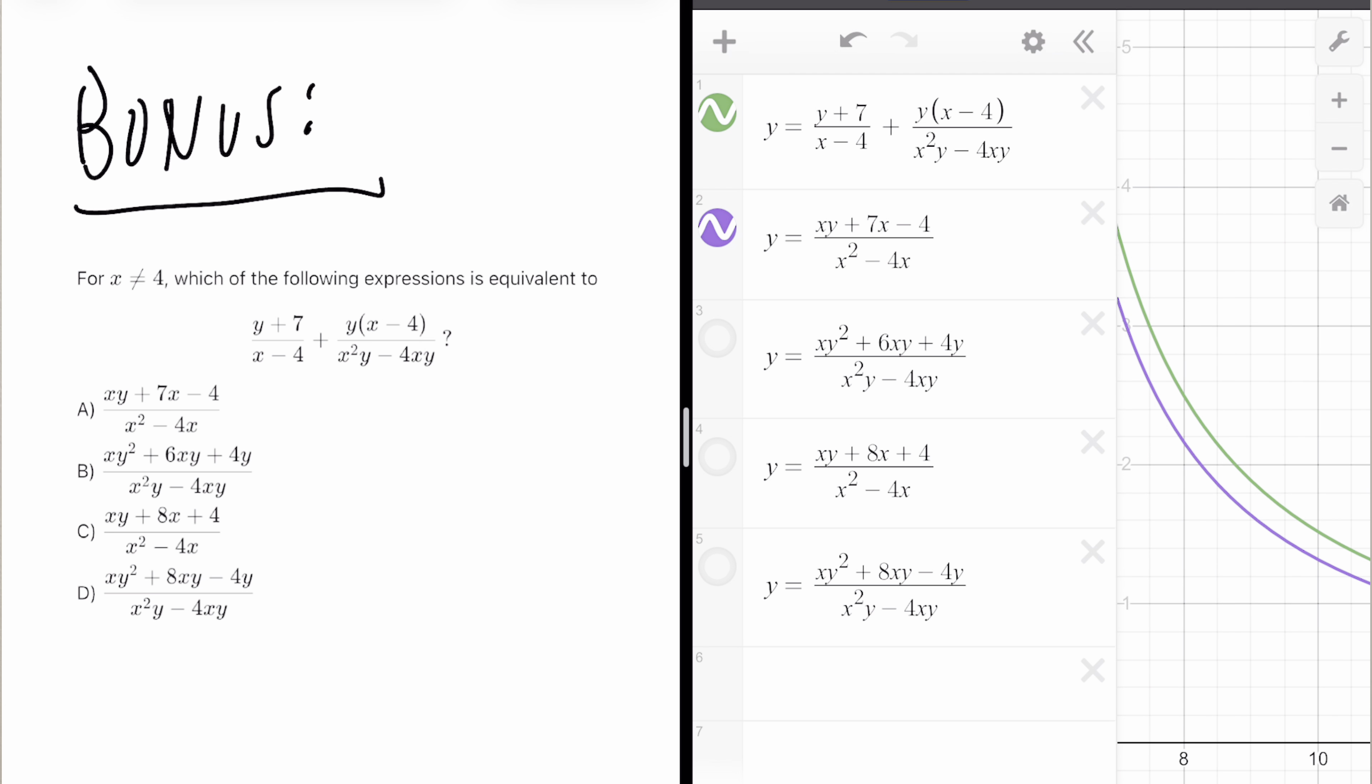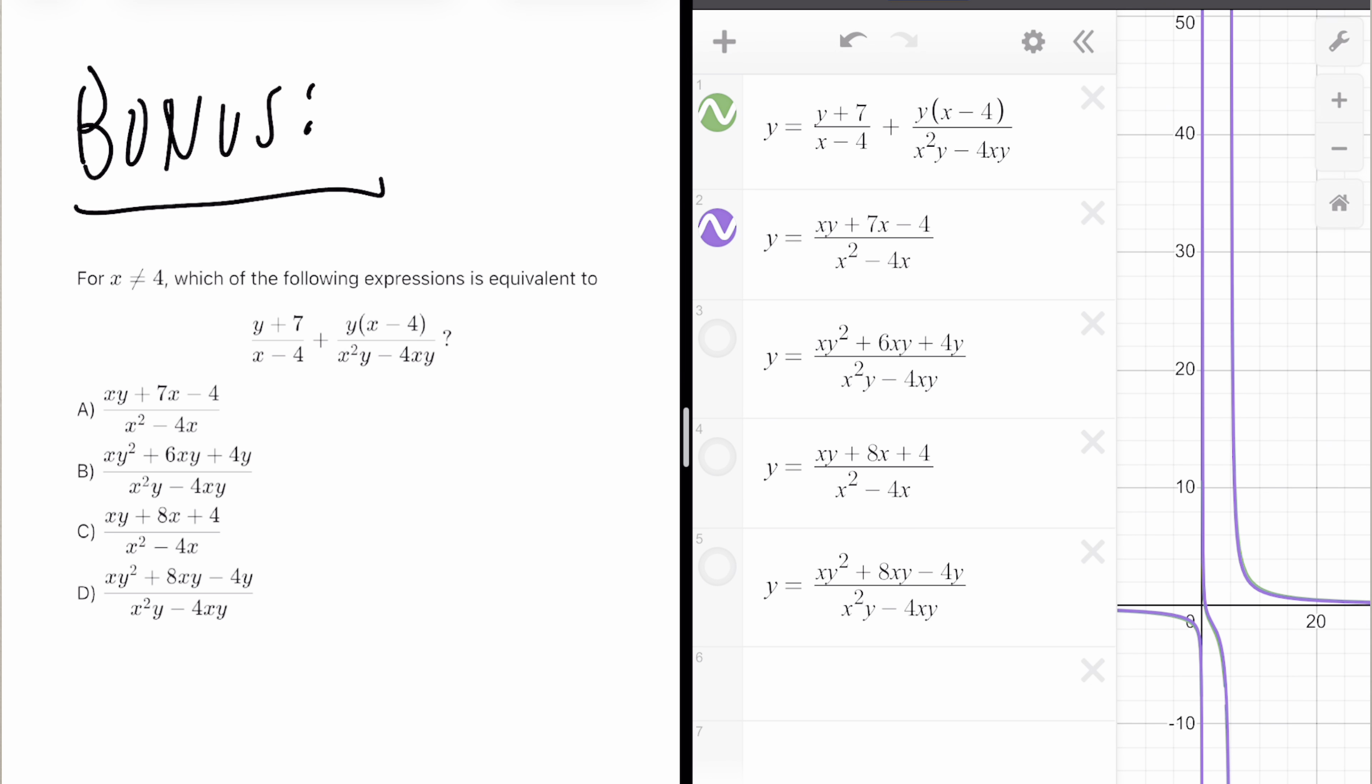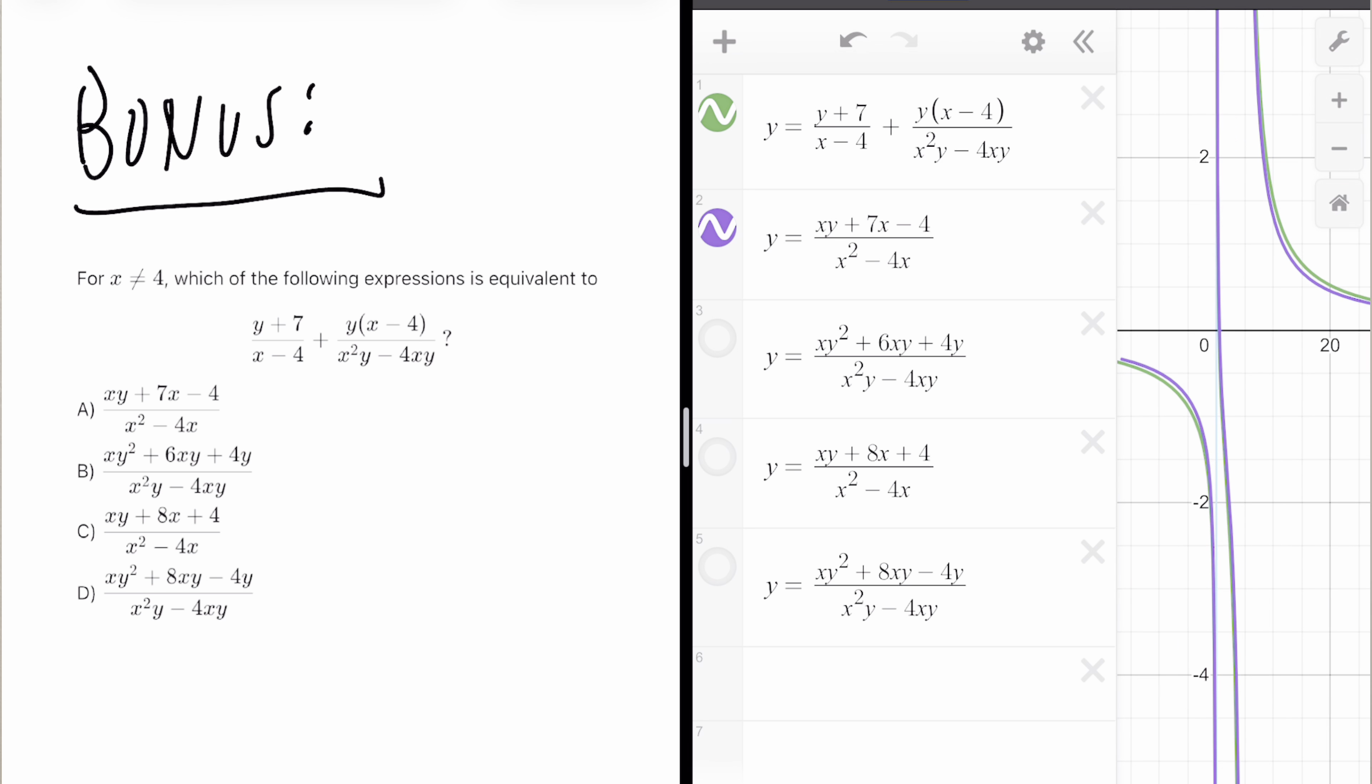Now let's go through the rest of the answer choices. Obviously, this is not the answer. C is not the answer either. But if we take a look at D, it is completely covering the green graph. I don't see any green on this graph anymore. That's how we know that D is our answer.